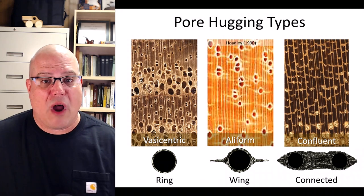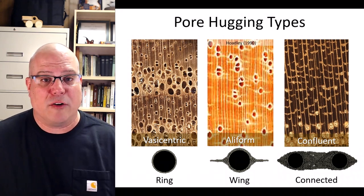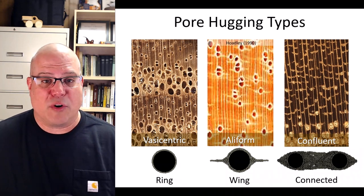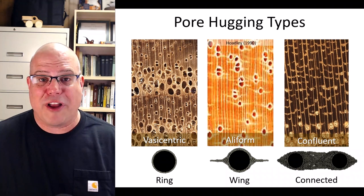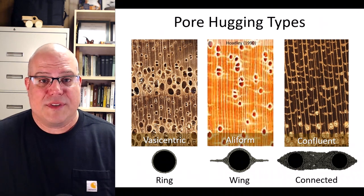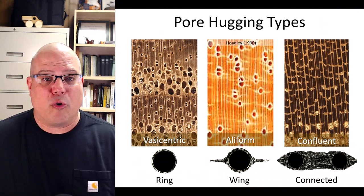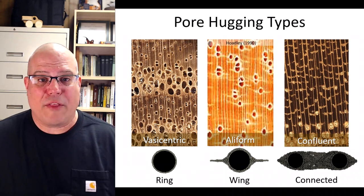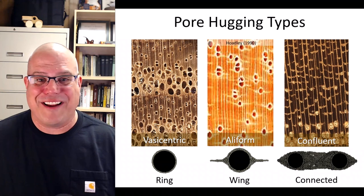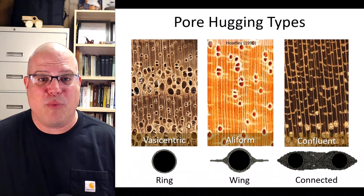Now that we've covered three kinds of pore-hugging patterns and three kinds of line patterns, let's see how each looks in real wood images. On the left, we have the vasocentric pattern — see how the pores in the late wood are surrounded by a ring of lighter-colored tissue? In the middle, we have the aliform pattern — see how almost every pore has lateral projections that look like thin wings? And on the right, we have the confluent pattern — can you see the little rivers of light-colored parenchyma tissue connecting the tiny pores in the late wood?